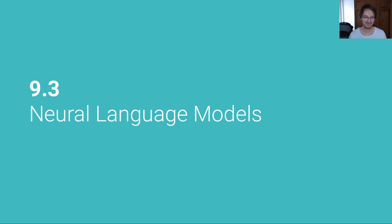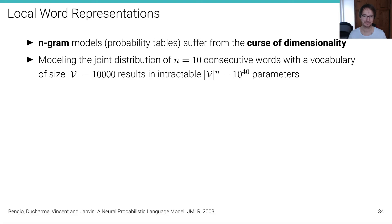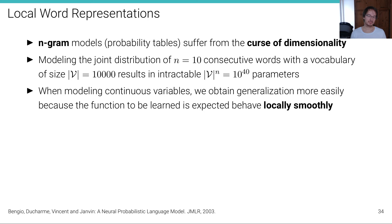This unit is about neural language models — language models that utilize neural networks for predicting the next word. We've seen that n-gram models, which are effectively just conditional probability tables, suffer from the curse of dimensionality. For instance, modeling the joint distribution of n consecutive words with a vocabulary of size V results in an intractable V to the power of n parameters — 10 to the power of 40 — even if we limit the history context to 10.